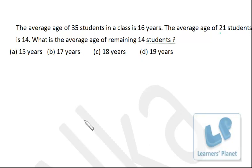Now we see this problem. The average age of 35 students in a class is 16 years. The average age of 21 students is 14. What is the average age of the remaining 14 students?